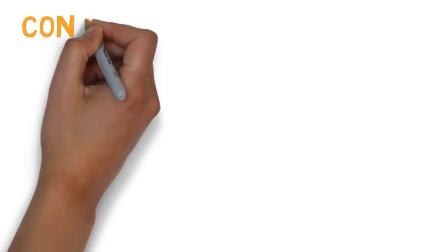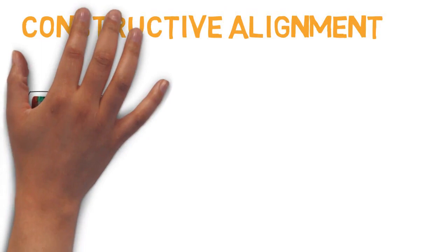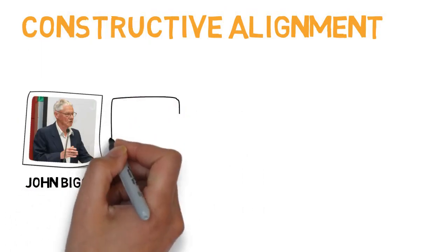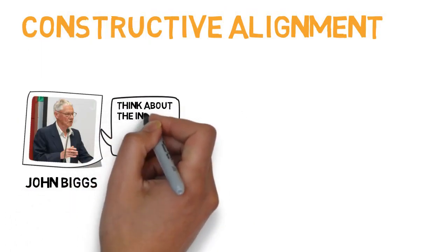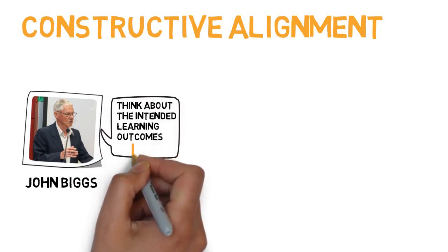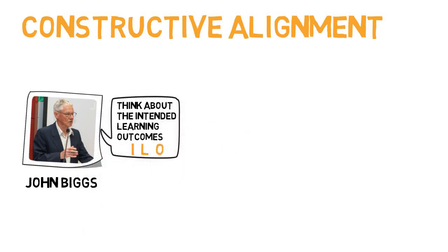One way to think about the design of your education is with the model of constructive alignment. This model was created by John Biggs in 1996. The model forces us to think about the Intended Learning Outcomes, or ILO, as the basis for the design.